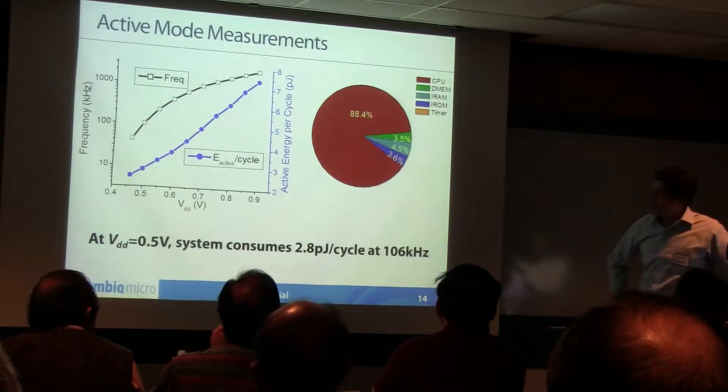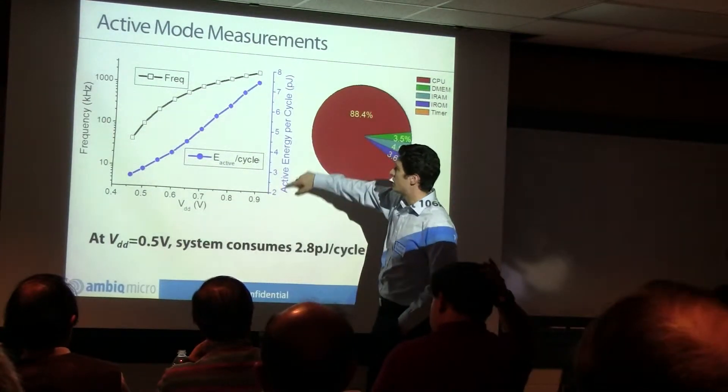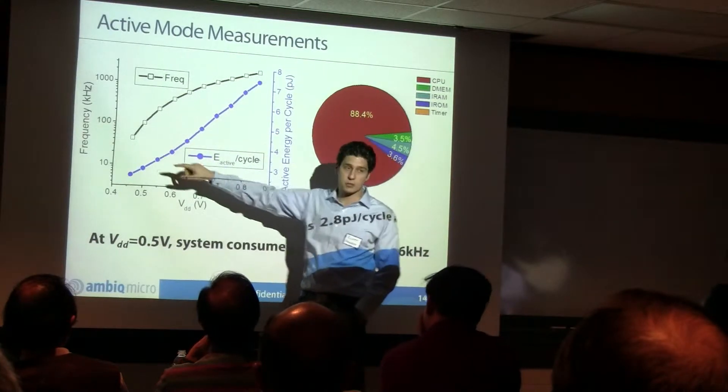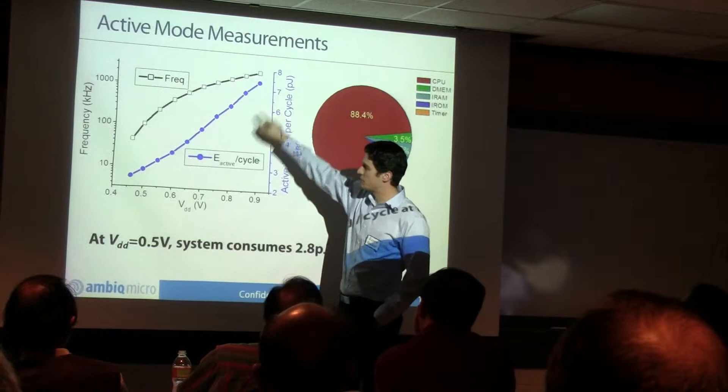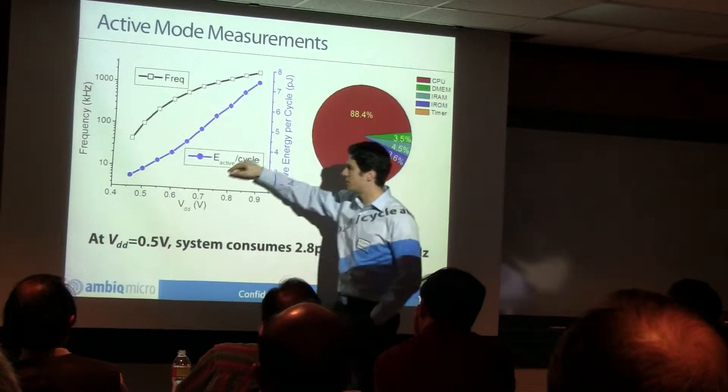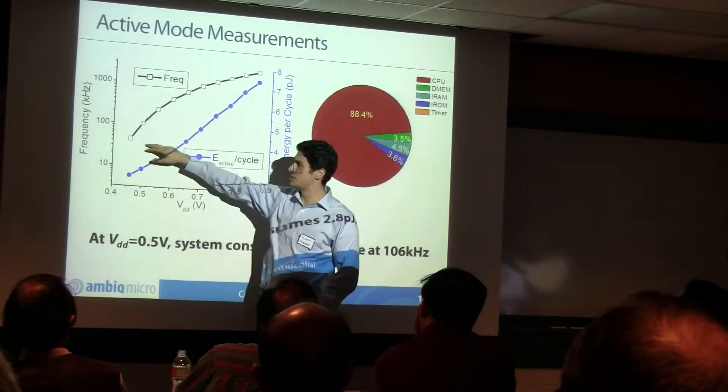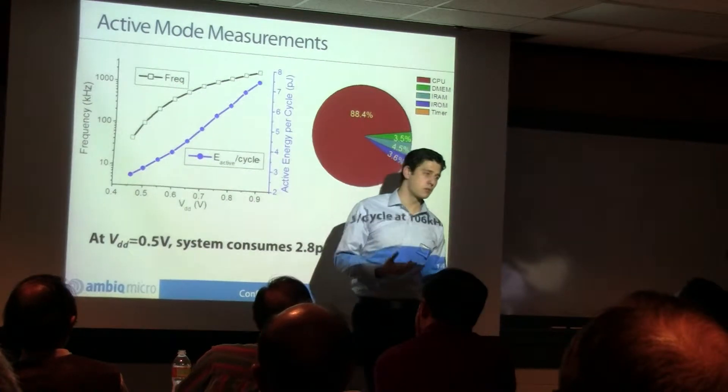Some quick measurements here. What I've got in the blue is the energy per cycle. In black, we've got the frequency of these things. First look at frequency. As you go down voltage, we're looking at a narrow voltage range here from 0.9 to about 0.45 volts. You do see a pretty dramatic drop-off in frequency. Down here at this really low voltage, you're only operating at about 70 kilohertz. So it's very, very low frequency.